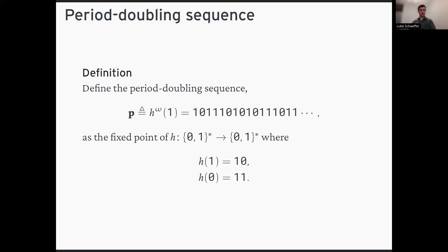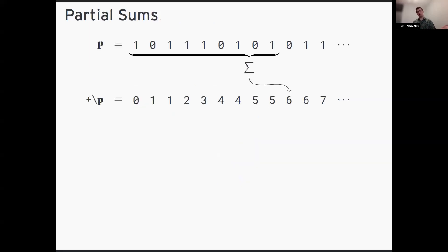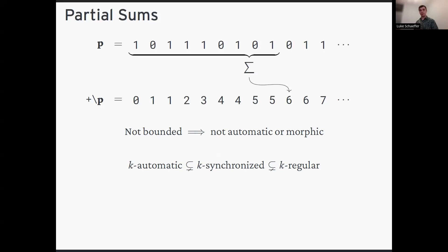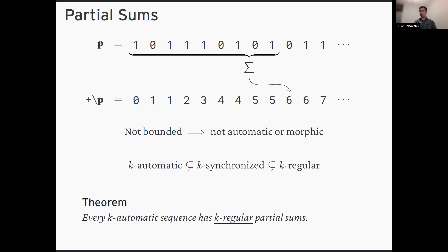What we want to do is sum up parts of the sequence. The sum of a factor is the difference of two prefix sums, so it suffices to look at prefix sums. We define the partial sum sequence where the nth term is the sum of the first n bits in period doubling. The first thing to know is that this sequence is not 2-automatic or morphic — we need other characterizations, which leads us to k-synchronized and k-regular sequences.